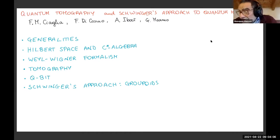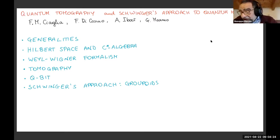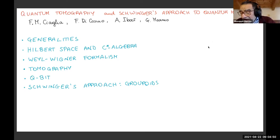Schwinger introduced what is called the algebra of selective measurement. We will argue — we have written quite a few papers — that the appropriate mathematical description is by associating a groupoid with every quantum physical system. Tomography deals with quantum states described by fair probability distributions, which are usually considered to be characteristic of a classical description. The Schwinger picture, on the other hand, uses as a paradigmatic example the Stern-Gerlach experiment. It is a two-level system represented by a spin-1/2 particle — nowadays it is called the qubit.